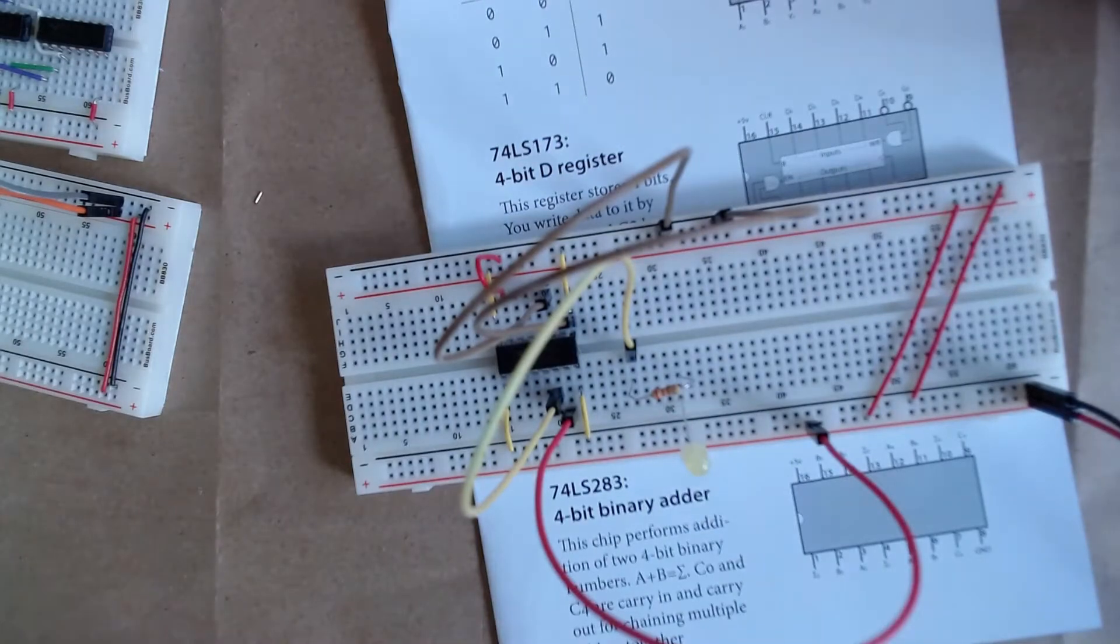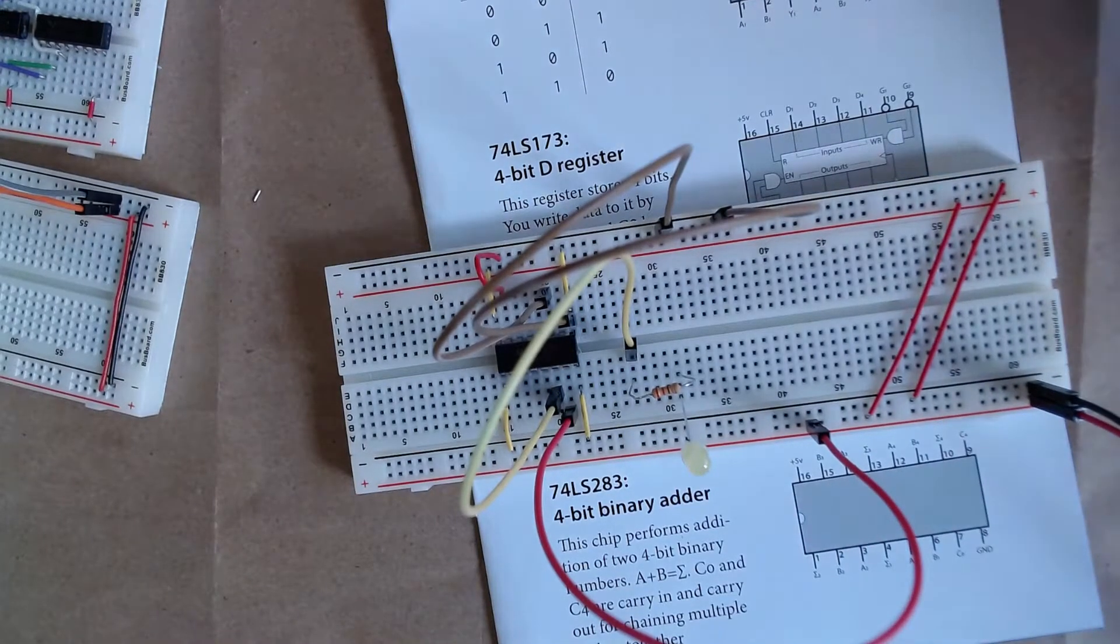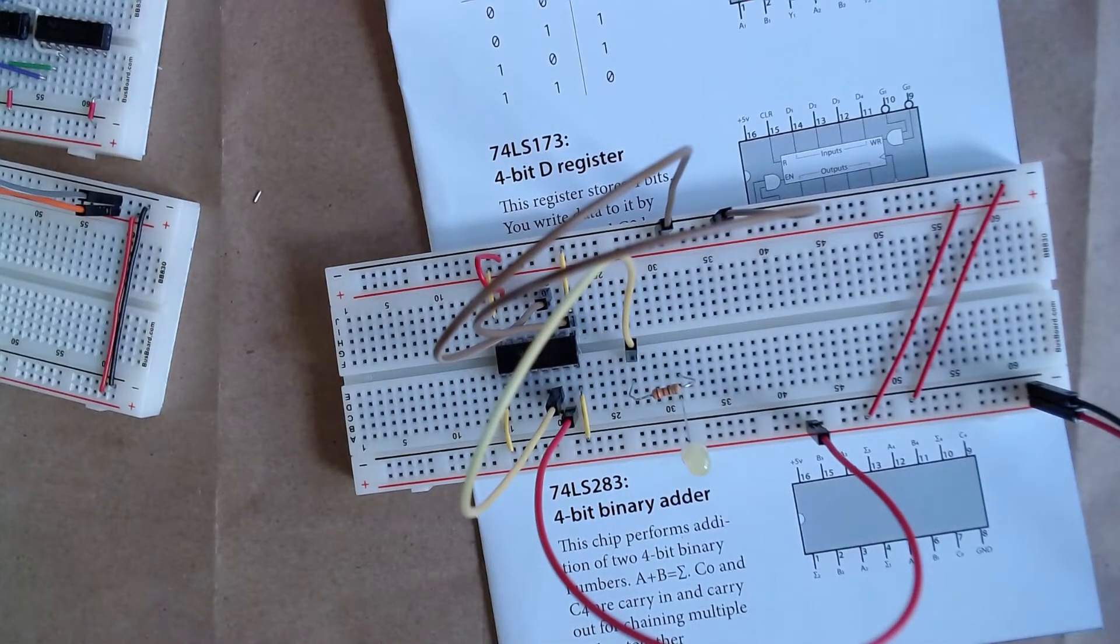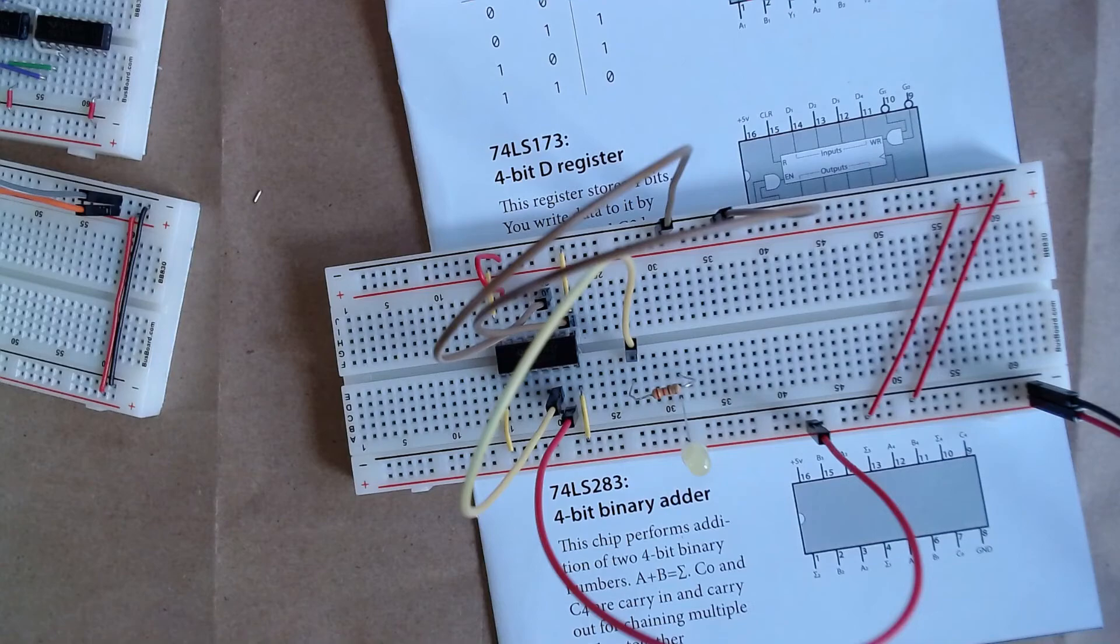So if anyone can help me kind of explain this, that'd be great. Otherwise, I'm gonna continue on. I'm going to move forward, I'm going to build that second register and assume this is properly working.